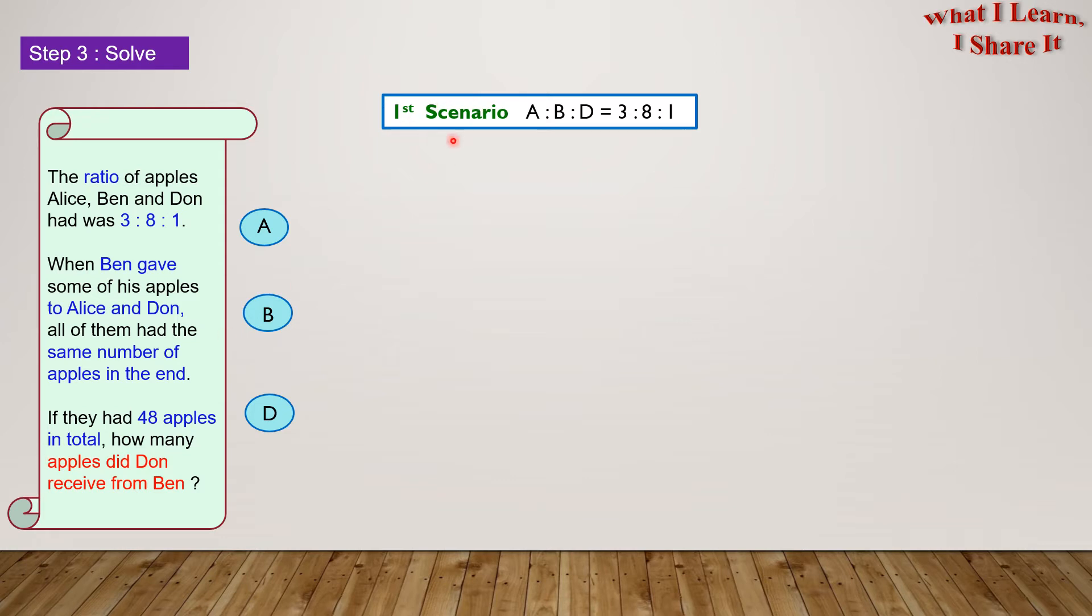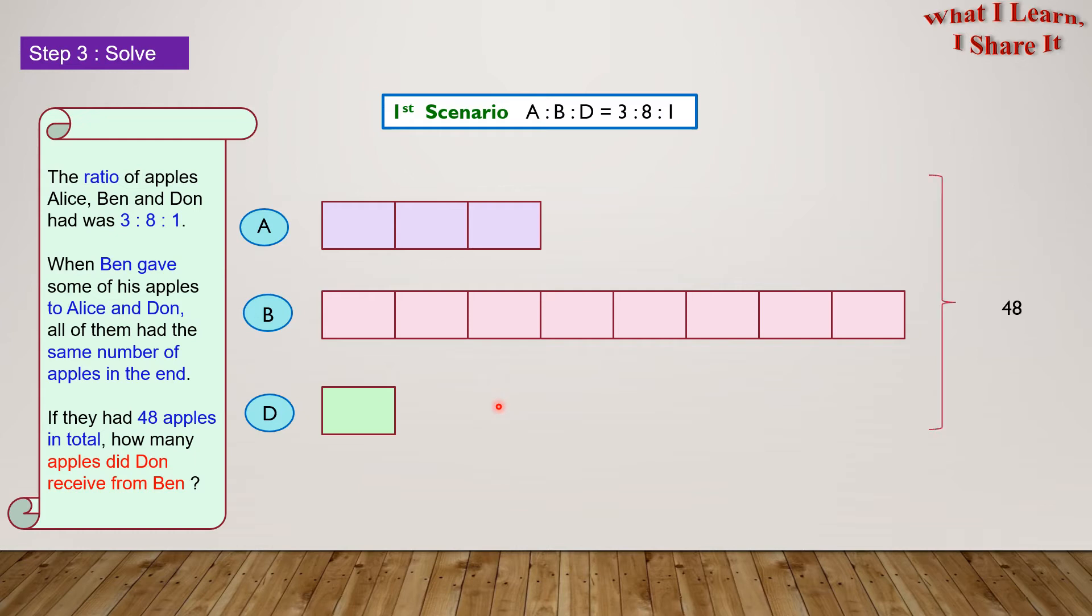In our first scenario, we have A is to B is to D equals to 3 is to 8 is to 1. So we'll take 1, 2, and 3 units for A, 1, 2, 3, 4, 5, 6, 7, 8 units for B, and 1 unit for D. And this has a total of 48. 12 units corresponds to 48 apples. So 1 unit will correspond to 48 divided by 12 equals to 4 apples.